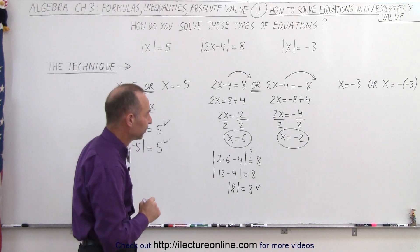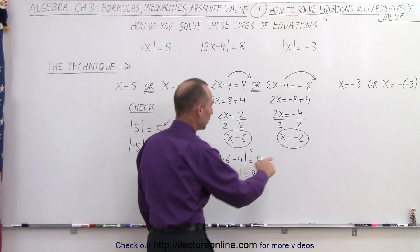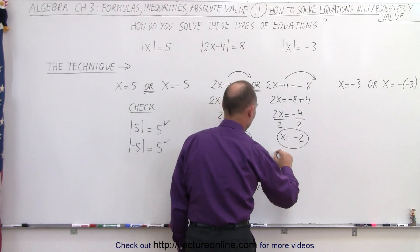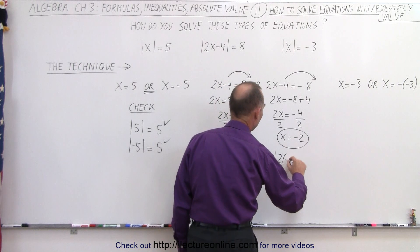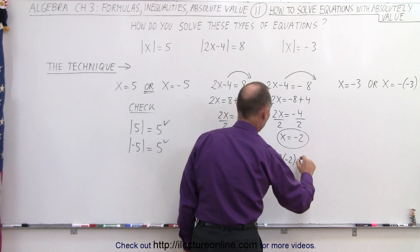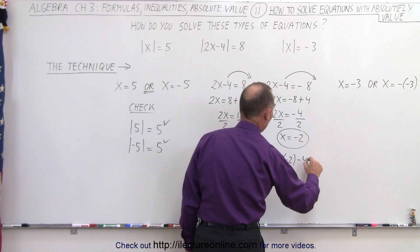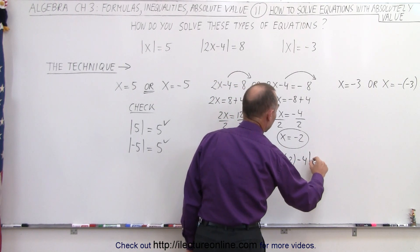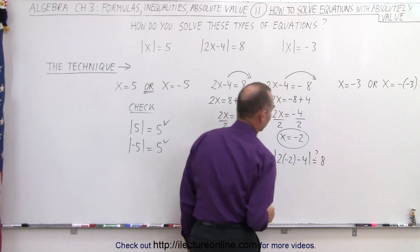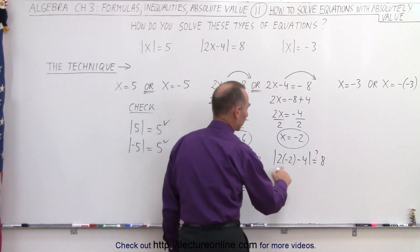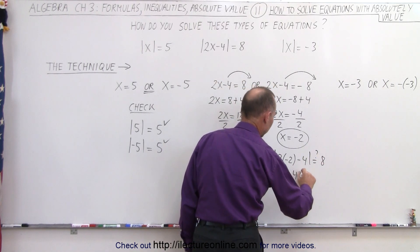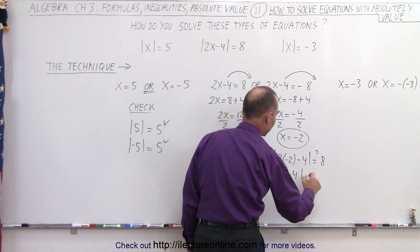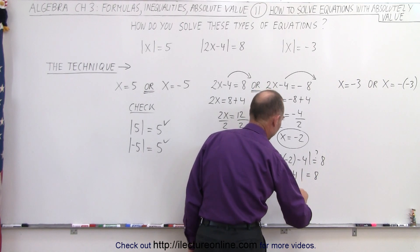How about the other solution? We plug in negative 2: the absolute value of 2 times negative 2 minus 4 — is that equal to 8? We get negative 4 minus 4, and we take the absolute value of that, which equals 8. Sure enough, that is also correct.